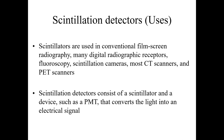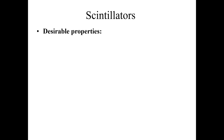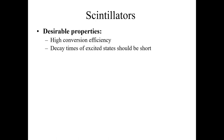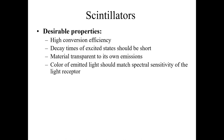Scintillation detectors consist of a scintillator and a device such as a photomultiplier tube (PMT) that converts light into an electrical signal. Some desirable properties of scintillators include high conversion efficiency, short dead time, and the material should be transparent to its own emissions. The color of the emitted light should also match the spectral sensitivity of the light receptor.